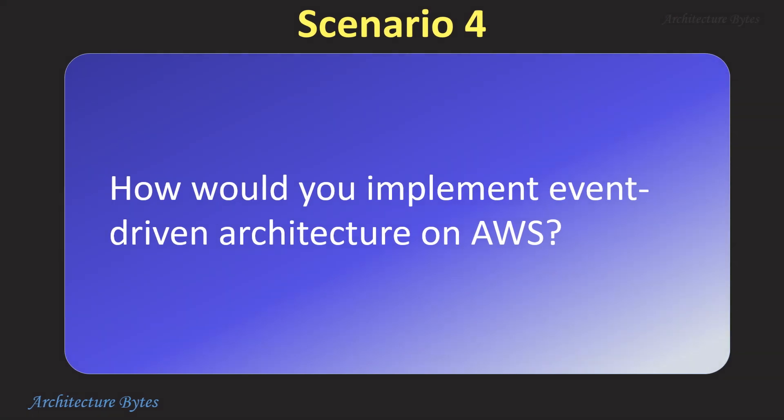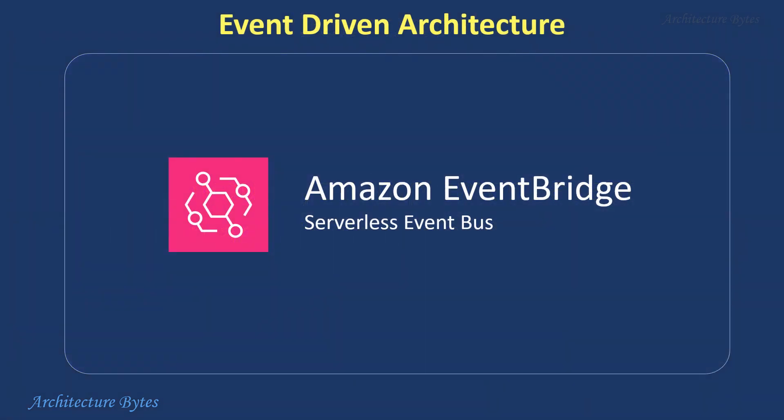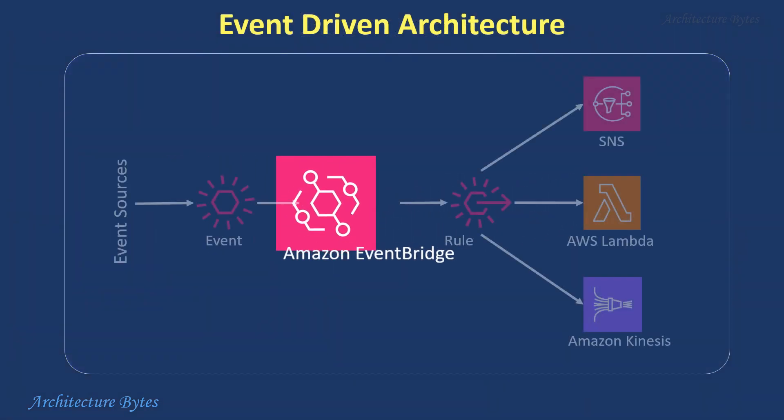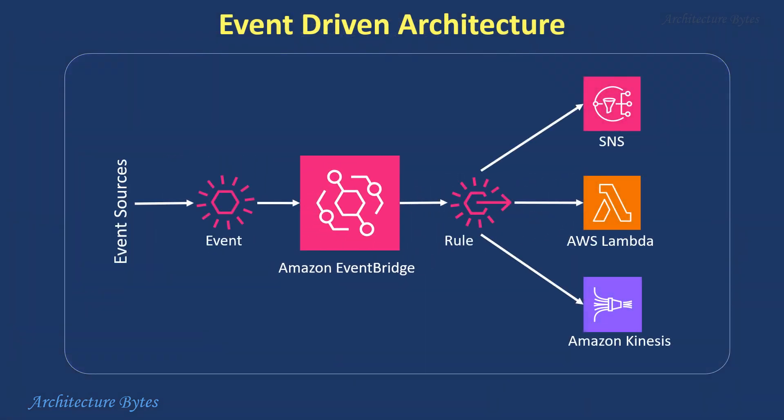How would you implement event-driven architecture on AWS? Amazon EventBridge is a serverless event bus that simplifies building event-driven architecture by providing a centralized hub for routing events from various sources to targets like Lambda functions, SNS and Kinesis for automated processing.